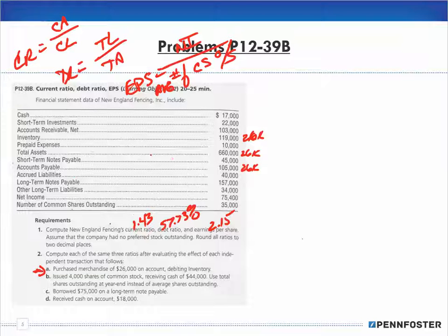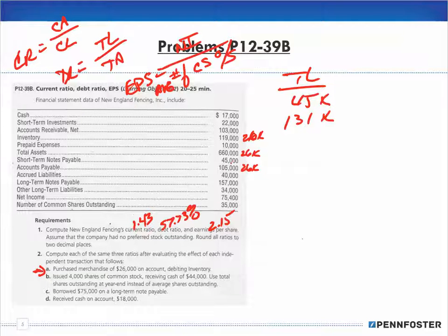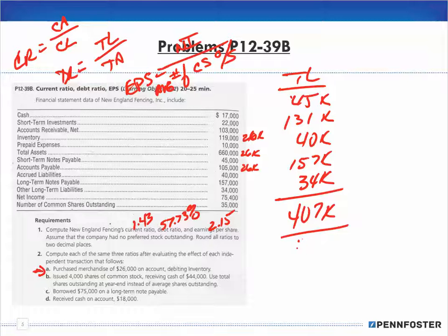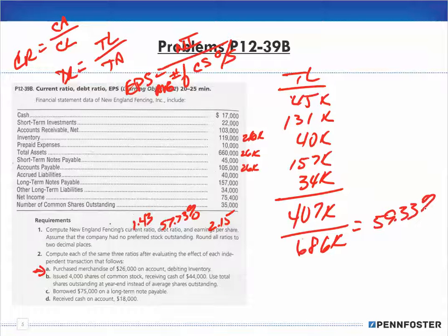For the debt ratio under Transaction A: total liabilities are 45,000 + 131,000 + 40,000 + 157,000 + 34,000 = 407,000. Total assets are 660,000 + 26,000 = 686,000. So 407,000 divided by 686,000 gives 59.33%.